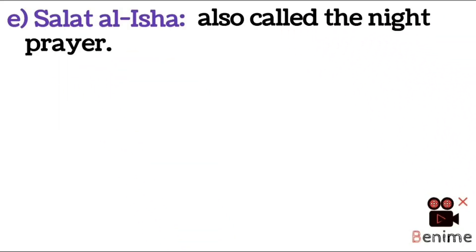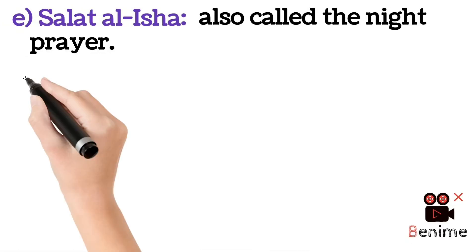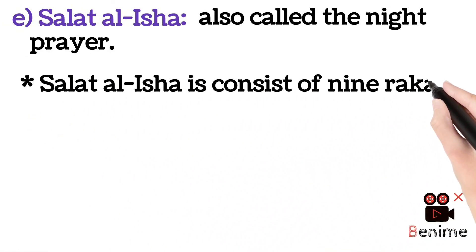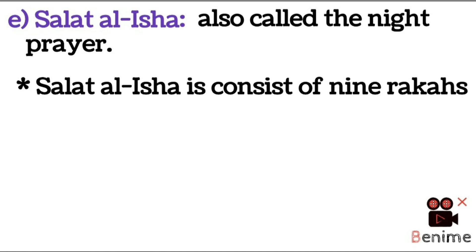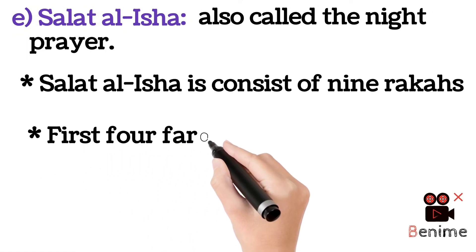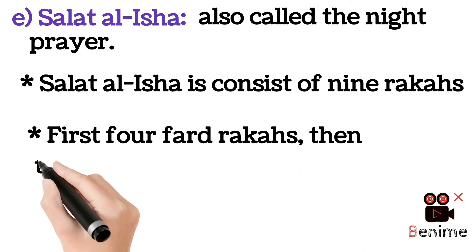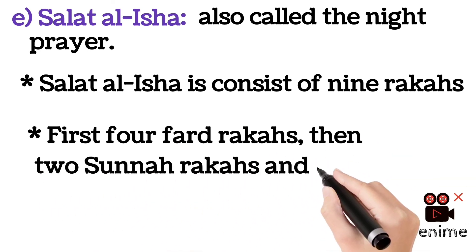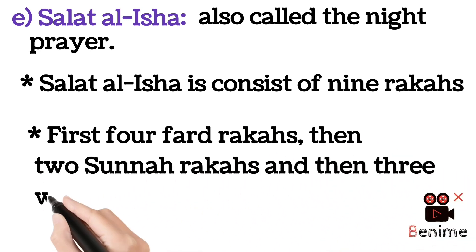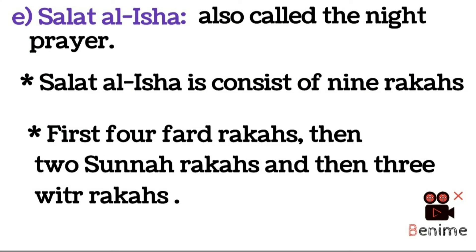Salat al-Isha, also called the night prayer, is conceived of nine rakahs: first four Fard rakahs, then two Sunnah rakahs, then three Witr rakahs.